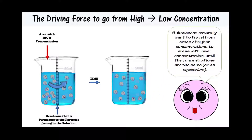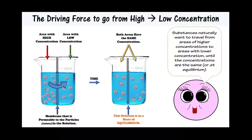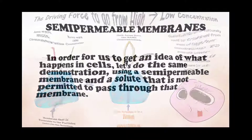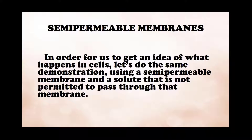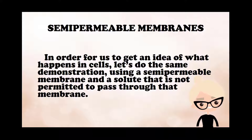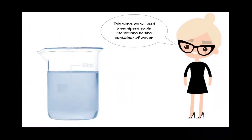There is a driving force on all particles to go from high concentration to low concentration. Substances naturally want to travel from areas of higher concentration to areas with lower concentration until those concentrations are the same, or at equilibrium. In order to understand what happens in cells, we must use a semipermeable membrane. Let's do this same demonstration using a semipermeable membrane and a solute that is not permitted to pass through that membrane.